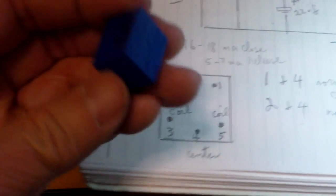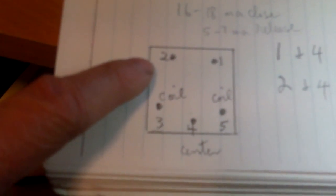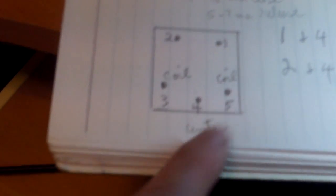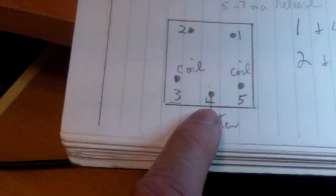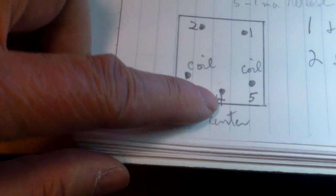This is a 10 amp relay and it has five pins. One and two are the normally close and the normally open switch. Three and five are the coil connection and number four is the center pin. One and four is normally closed.